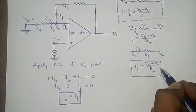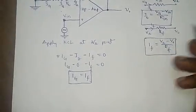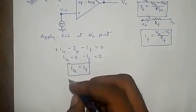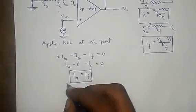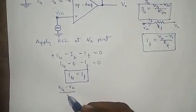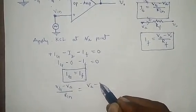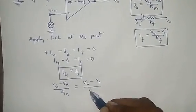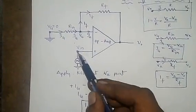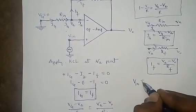Substituting into the KCL equation: (VZ − VA) / Rn = (VA − V0) / RF. According to the virtual ground concept, VIN is equal to VA.